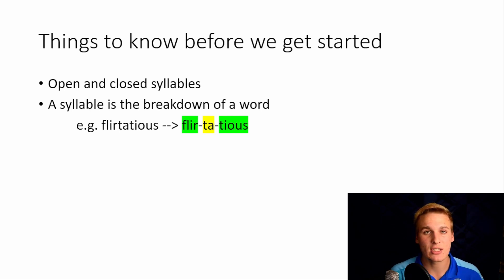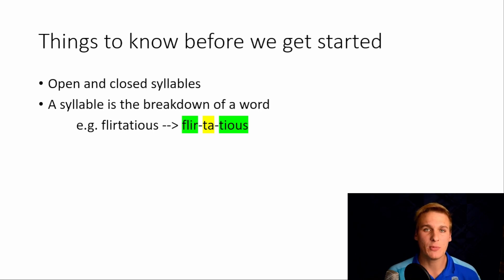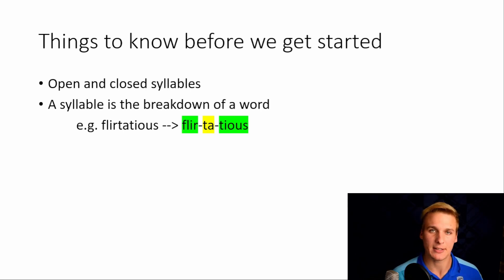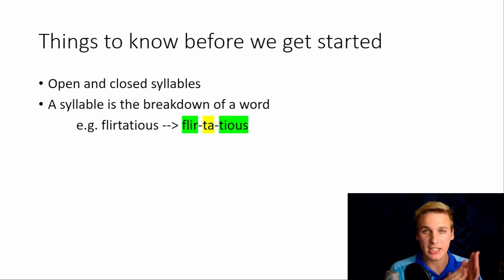Just a few things you need to know before we get started with this episode. You need to know what a syllable is — what is an open and a closed syllable. A syllable is how you break down a word. We can do this by clapping. For example: flir, te, schis.